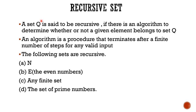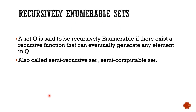Here is the definition: a set Q is said to be recursive if there is an algorithm to determine whether or not a given element belongs to set Q. Now, a recursively enumerable set — we call it recursively enumerable language. Almost all formal languages are recursively enumerable. A set Q is said to be recursively enumerable if there exists a recursive function that can eventually generate any element in Q.